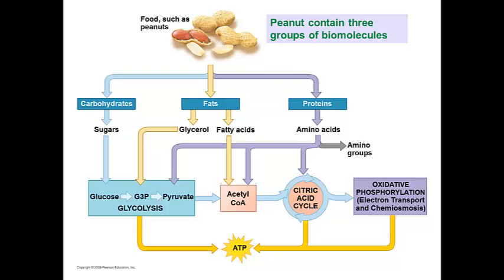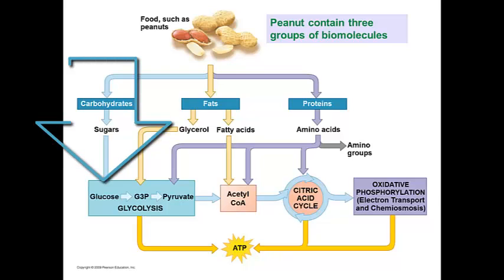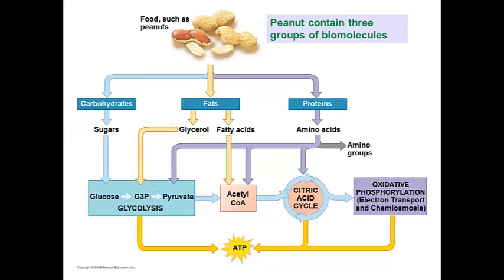Glycolysis can accept a wide range of carbohydrates for catabolism. In the GI tract, enzymes hydrolyze starch into glucose. The liver will hydrolyze glycogen to glucose. And then other disaccharides or carbs are used as fuel for glycolysis.